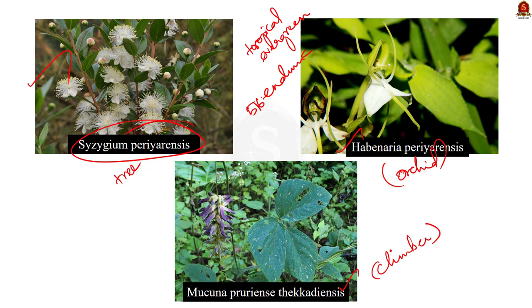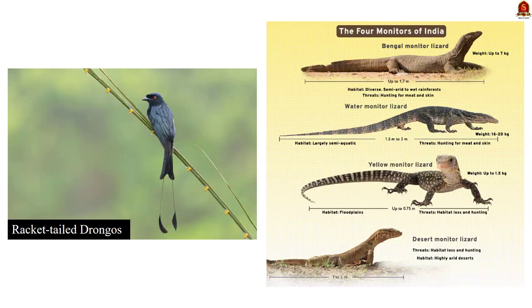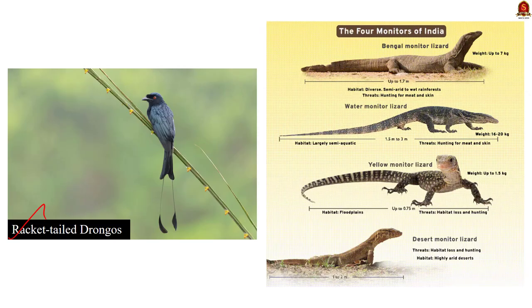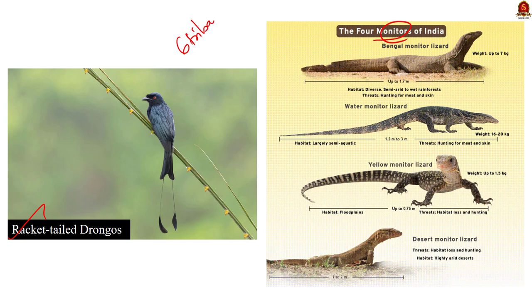The reserve supports mammals like tiger, elephant, lion-tailed macaque, and Nilgiri tahr, and birds like darters, cormorants, kingfishers, the great Malabar hornbill, and racket-tailed drongos. Knowing the names of birds is helpful in prelims since UPSC asks questions identifying specific species. The reserve also supports reptiles like monitor lizards, pythons, and king cobra. There are six tribal communities nestled inside the reserve: Mannas, Pallians, Malayarayans, Mala Pandarams, Uralis, and Ulladans.